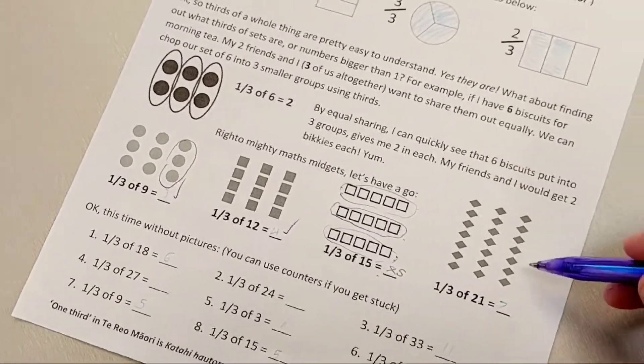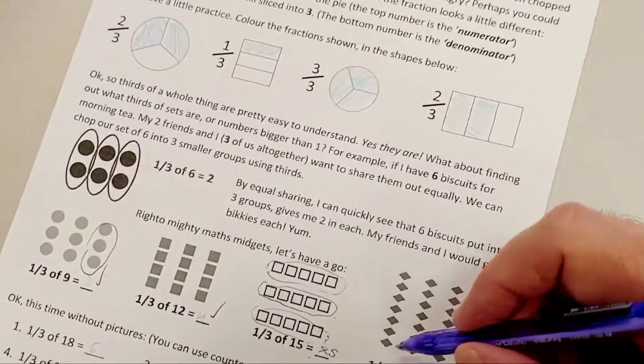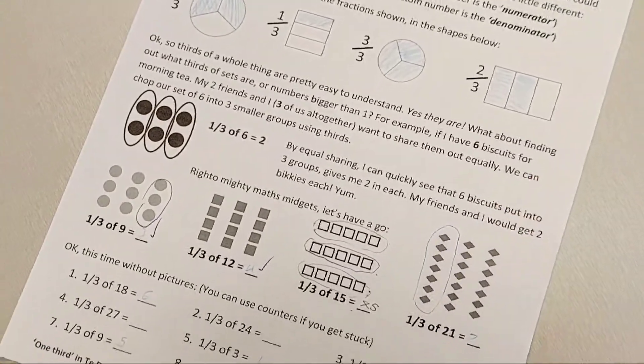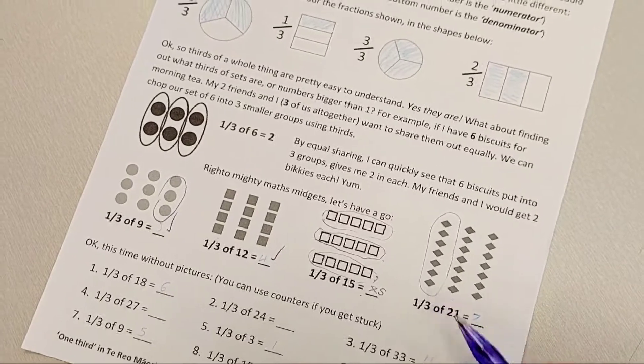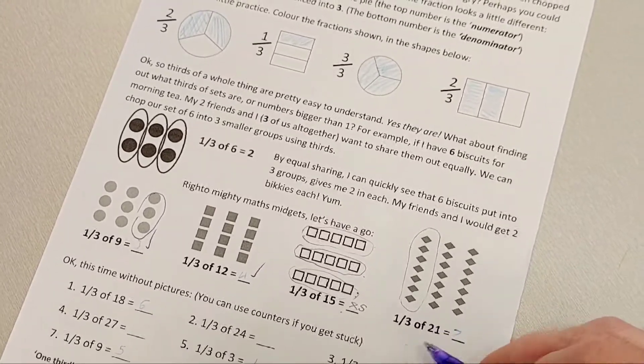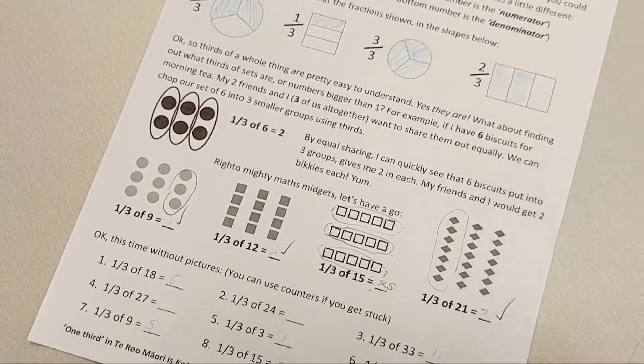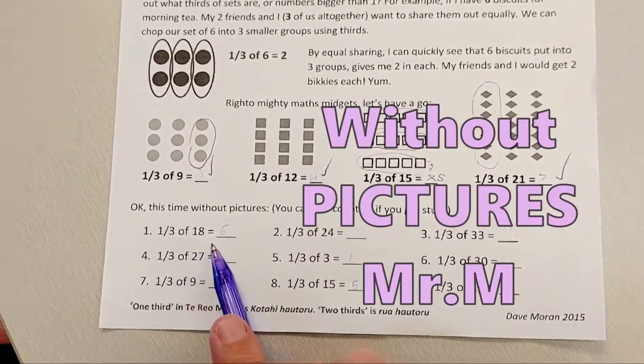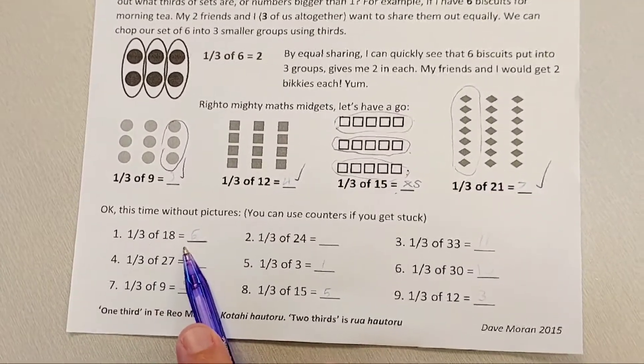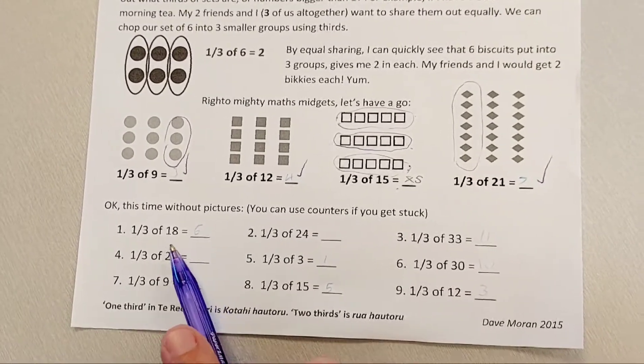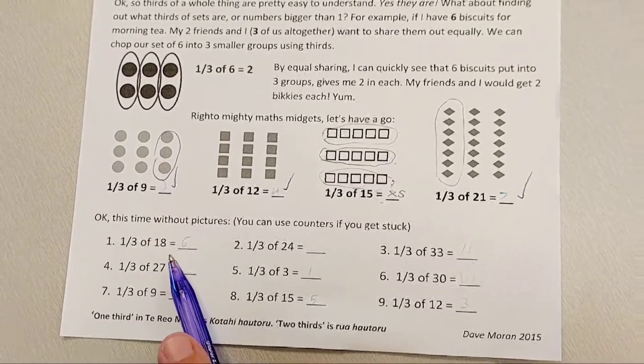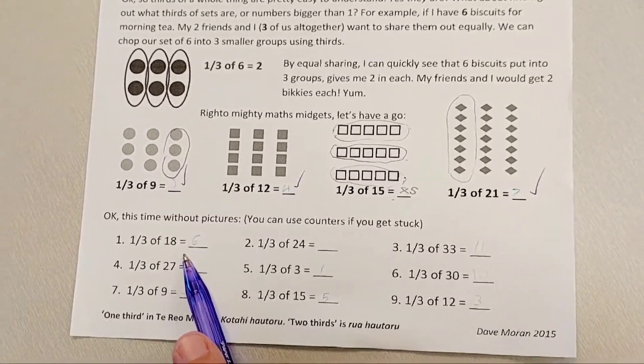You've got this one, right? So you can see there if we made that into a group like that, there's seven in each of those three groups. So one third of 21 is seven. Now, down here we're doing it without numbers. But if you're stuck, what you can do is draw out those with dots or crosses or whatever and equally share them that way.